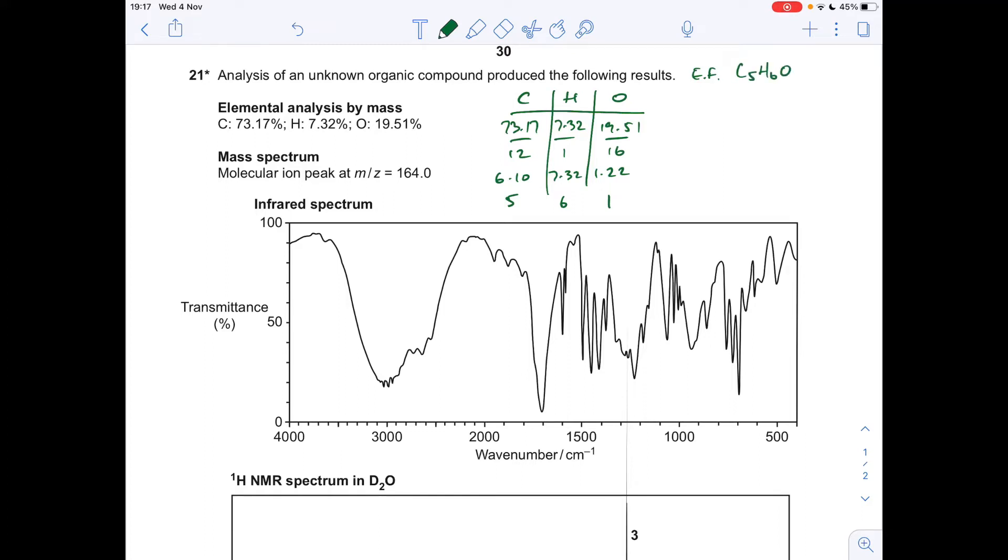So that's got an MR of 82, and we're told that in the mass spectrum, the molecular ion peak is at M over Z 164. So that's the MR of the molecule. Obviously it's more than just the 82, it's actually twice as much, and so therefore the molecular formula is C10H12O2.